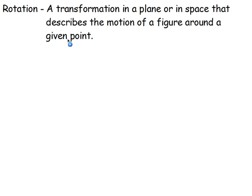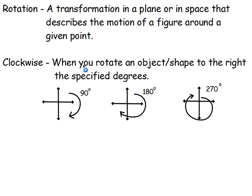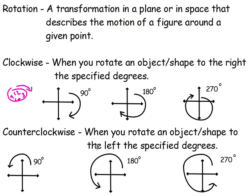We can rotate something two different ways. We can rotate it clockwise, which means we rotate it to the right. So 90 degrees is one quadrant, 180 is two quadrants, 270 is three quadrants. Just like a clock — if we think about 12, 3, 6, and 9 on the clock, we start at 12 and go clockwise to the right. Our other direction is counterclockwise, and that's just when it goes to the left.